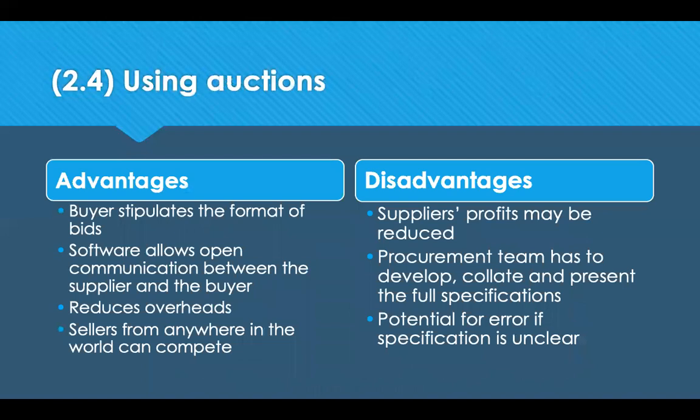In terms of auction advantages: the buyer can stipulate the format of the bids; there's open communication between buyer and suppliers, and you can ask questions during a live auction; it reduces overheads; and sellers can bid from anywhere in the world. The downsides are: suppliers will reduce their profits in order to be competitive; your procurement team needs to develop, collate and present full specifications in advance — there's a huge amount of work upfront; and there's potential for error if the specification is unclear, though in fairness that could happen in a traditional tender too.